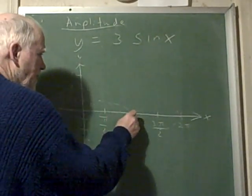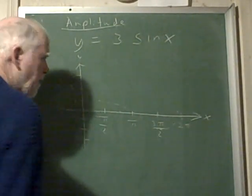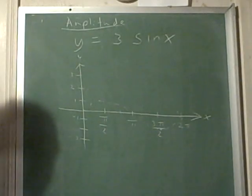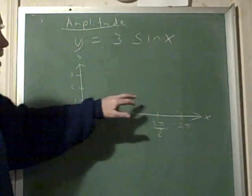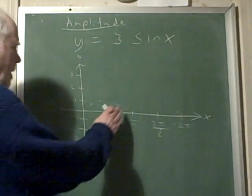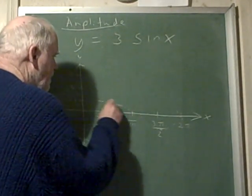It goes up to one, down to zero, down to negative one, and up to zero again. And what happens here is we're going to multiply every point by three. Let me make this look a little nicer here, there, more like that.